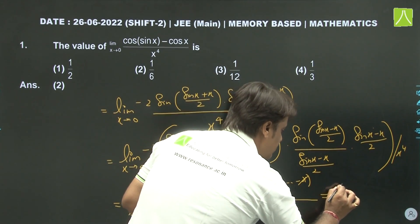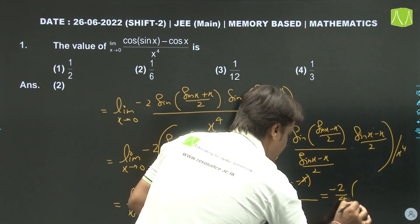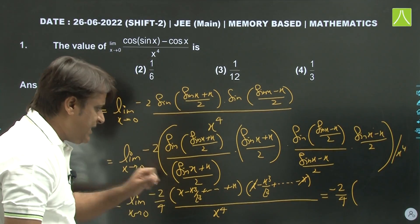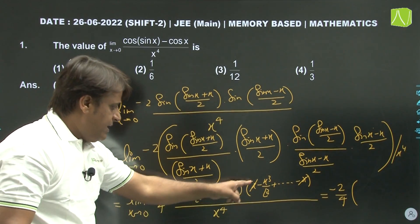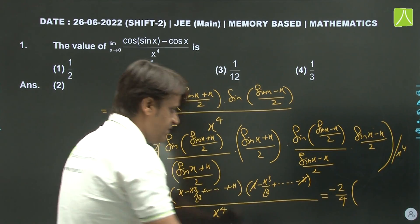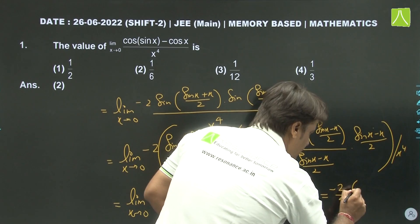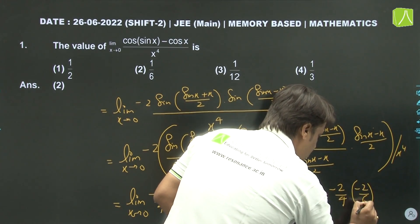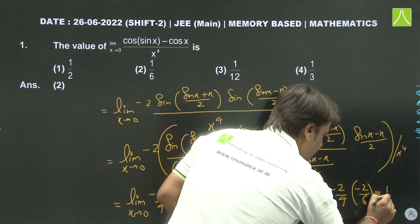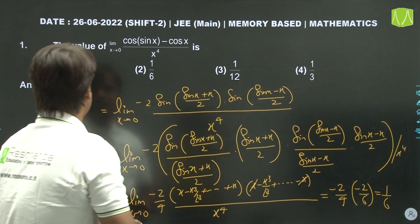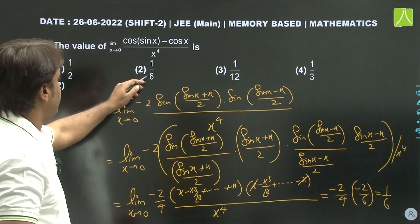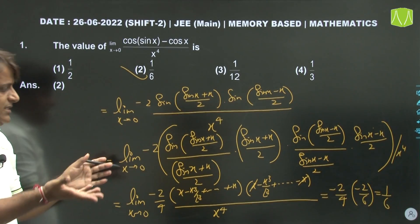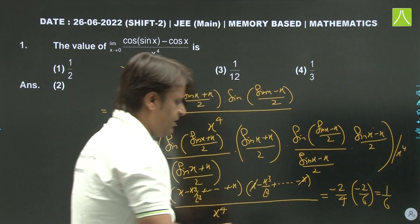We get minus 2 upon 4 multiplied by minus 1/6, which gives minus 2 by 6, so the answer is 1/6. The second option is the correct option. It was not a tough question — it was an easy question.